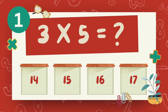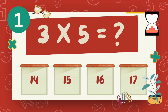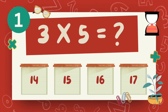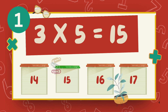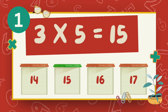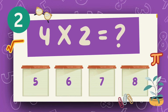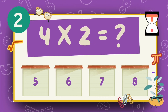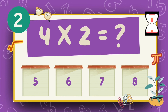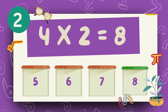What is 3 multiply 5? The answer is 15. What is 4 multiply 2? The answer is 8.